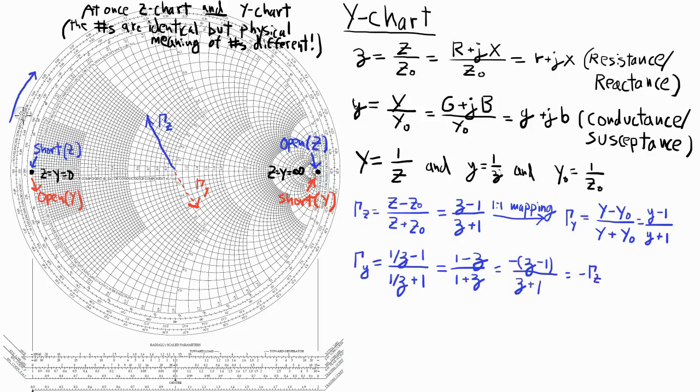So what happens as I rotate clockwise on the Smith chart away from the z equals zero point? Well, on the z chart, I become more inductive as my z is increasing. While at the same time on the y chart, if I'm on the y chart and my y is increasing, that means I'm becoming more and more capacitive.